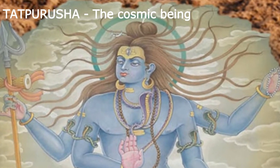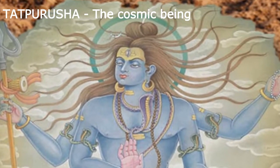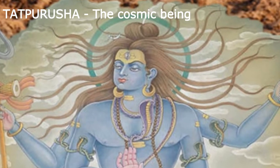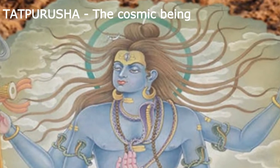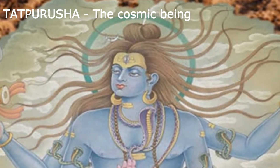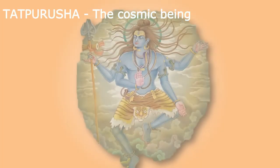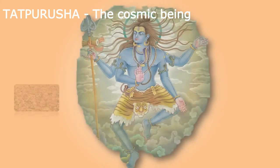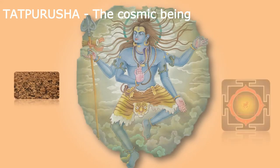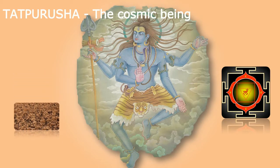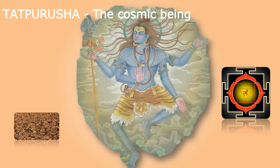In its higher manifestation, it is bliss, and in the lower manifestation, it is the concealing power of Shiva. It is connected to the Annamaya Kosha and is associated with the earth element and Mooladhara Chakra, and is beneficial for increasing focus.